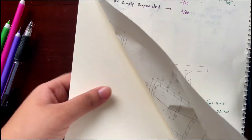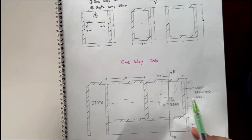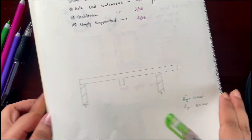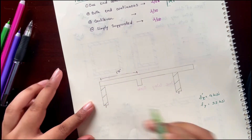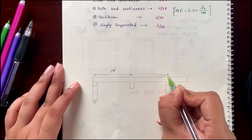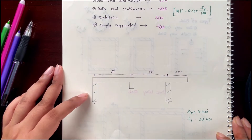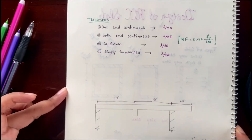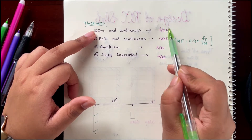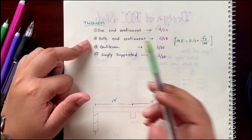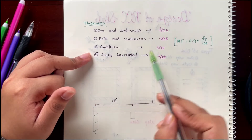Now if we look at the dimensions: there is a 5-feet dimension, center to center distance. Then there is a 30-feet dimension for that portion, and another 6.5-feet portion. For slab thickness: one-end-continuous slab uses L by 24; both-ends-continuous slab uses L by 28; cantilever slab uses L by 10; simply-supported slab uses the standard formula.